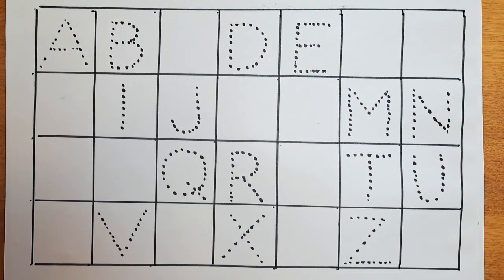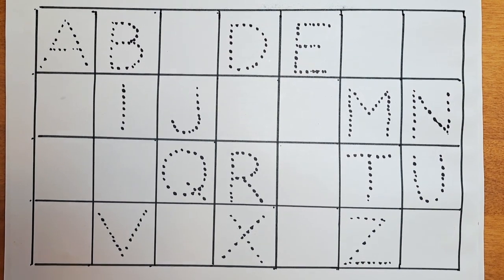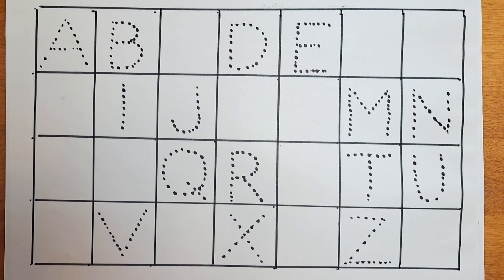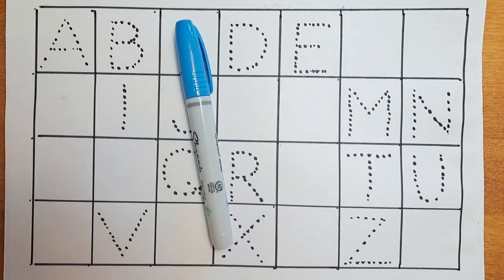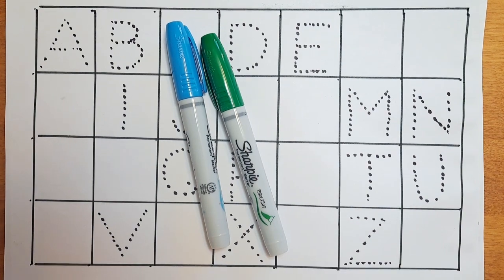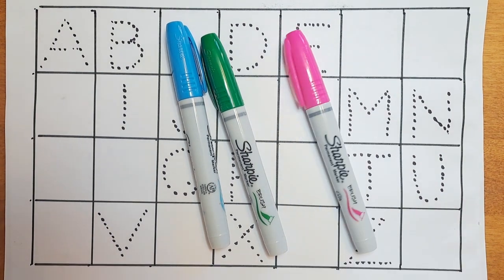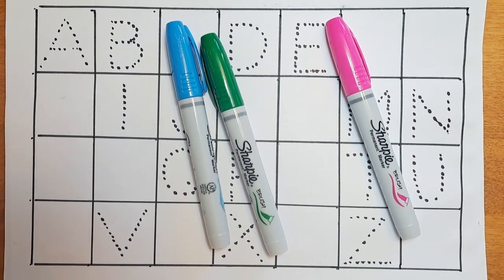Welcome back to my channel. We have an alphabet sheet with some missing alphabets. Let's complete the missing alphabets in this sheet with different colors. I have light blue, green and pink. Let's do it with me.